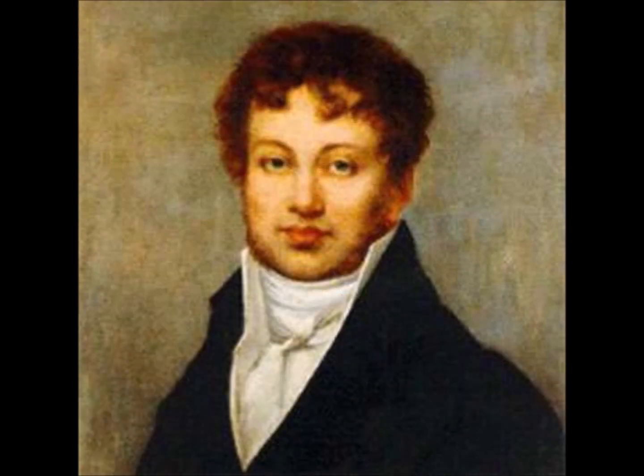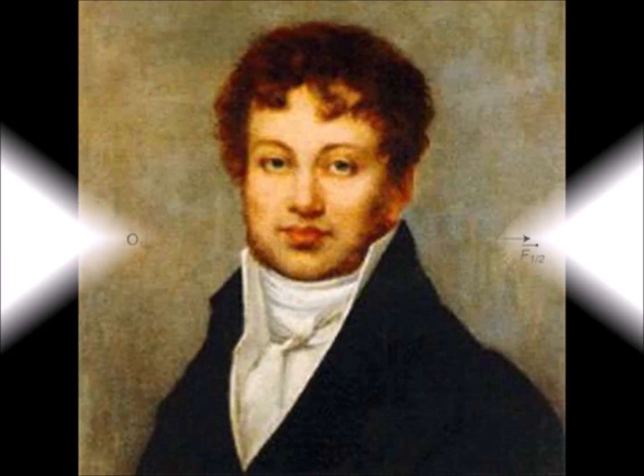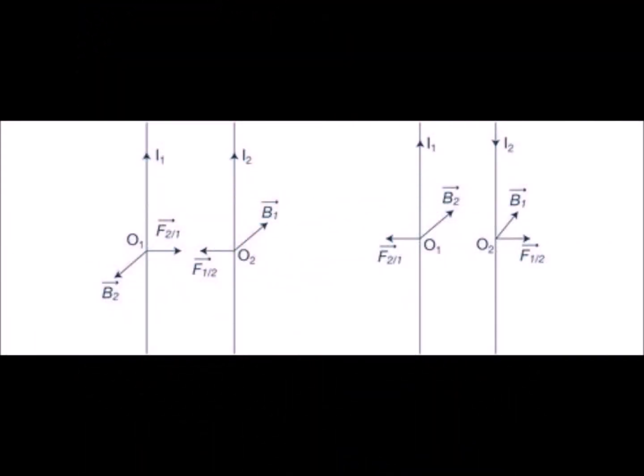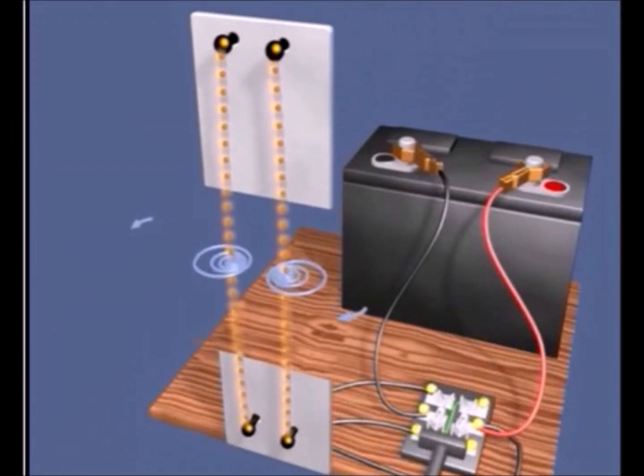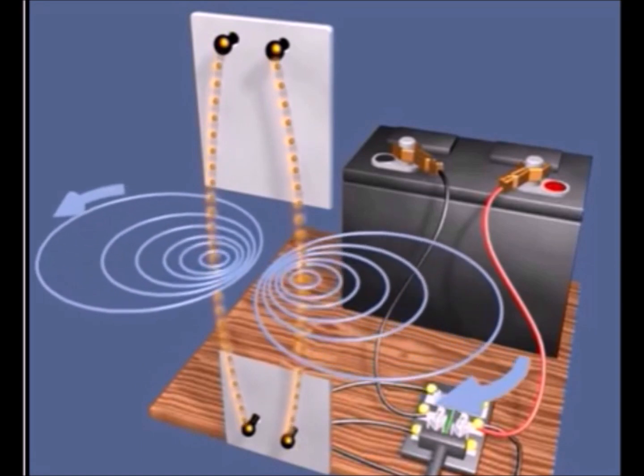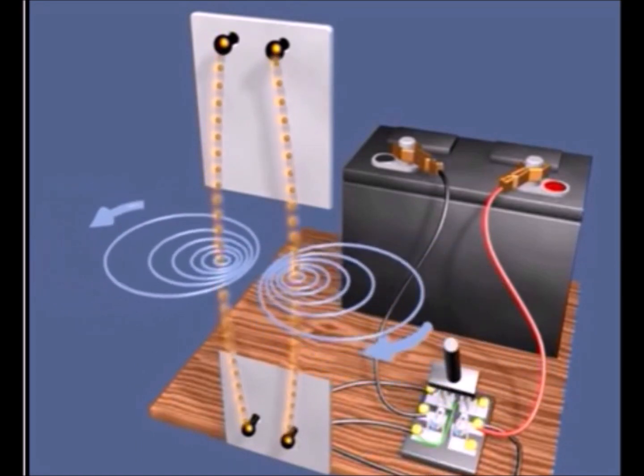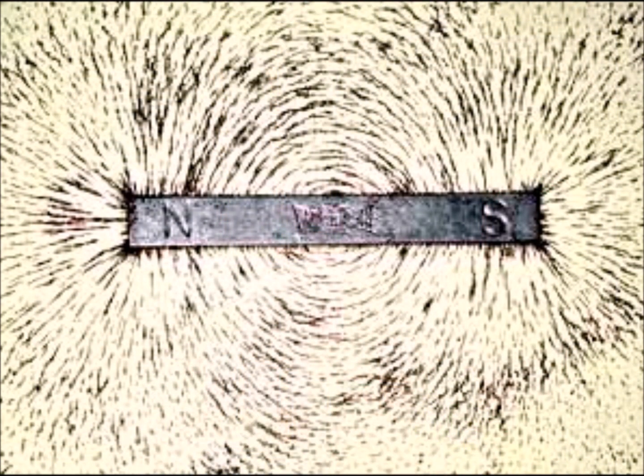Ampere noticed, around 1830, that an electrical wire through which a current flows attracts another electric wire through which a current flows in the same direction and repels it otherwise. The electric wire therefore behaves like a magnet. Magnetism is therefore a phenomenon common to magnets and electric currents.